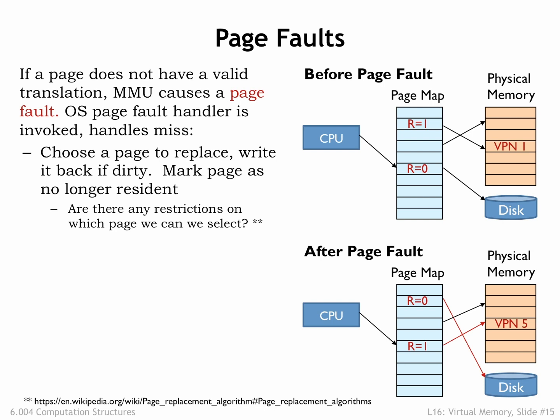Are there any restrictions on which page we can select? Obviously we can't select the page that holds the code for the page-fault handler. Pages immune from selection are called wired pages. And it would be very inefficient to choose the page that holds the code that made the initial memory access, since we expect to start executing that code as soon as we finish handling the page fault.